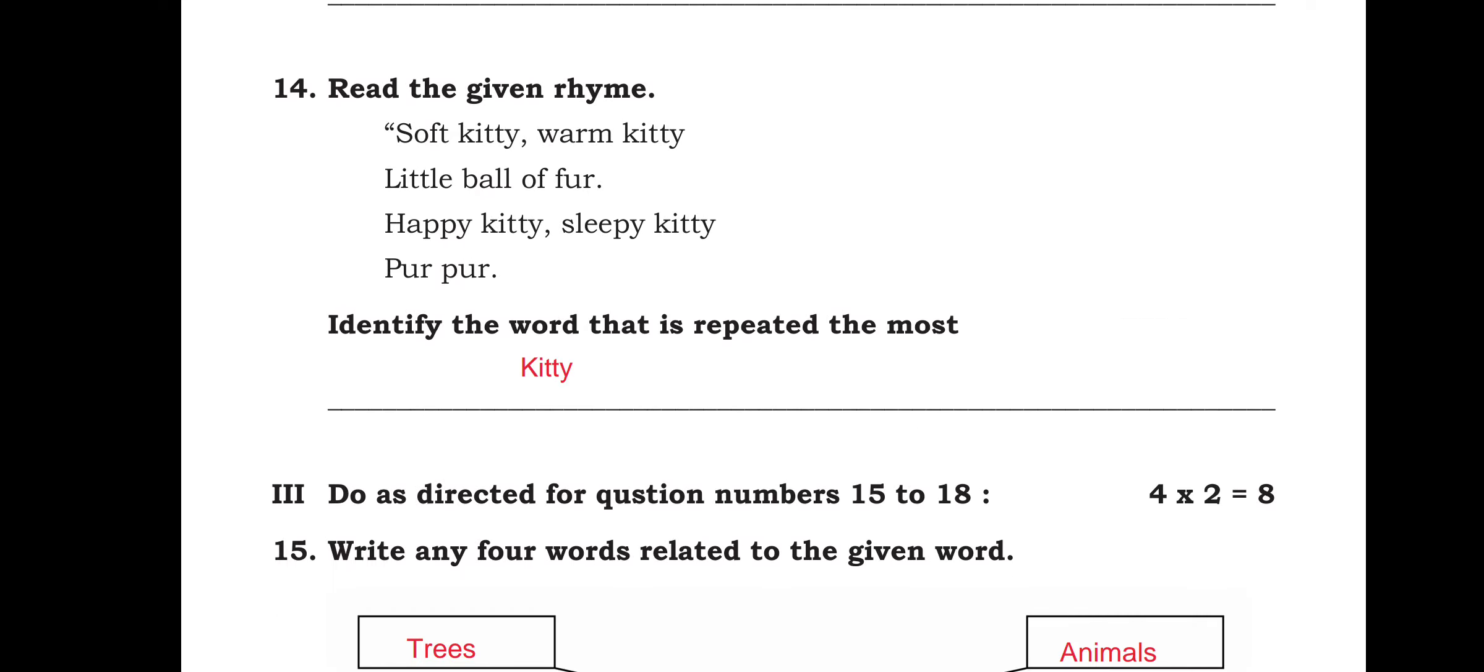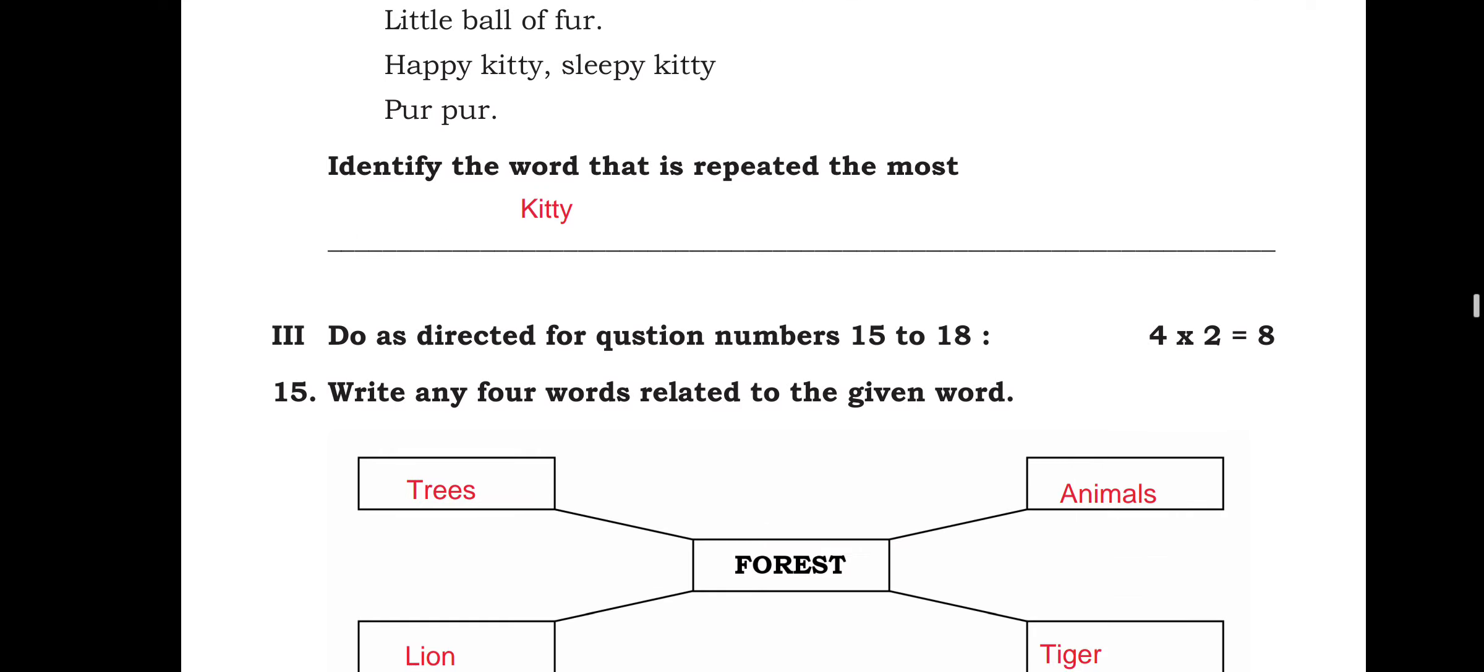Read the given rhyme. Soft kitty, warm kitty, little ball of fur, happy kitty, sleepy kitty, pur pur. Identify the word that is repeated the most. Means in every line or most of the lines, this word is there. So which is that line? Repeated the most. So it is kitty, K-I-T-T-Y.